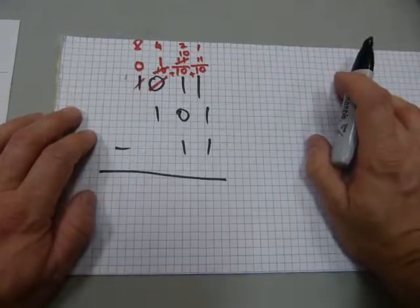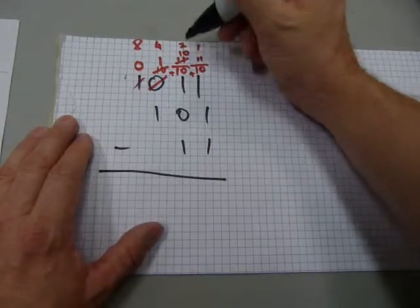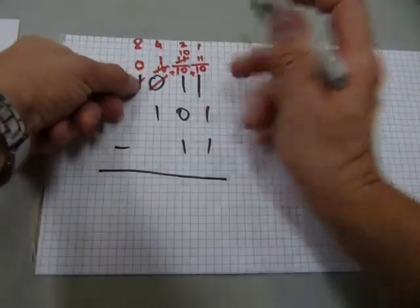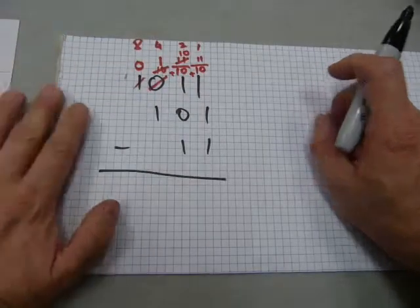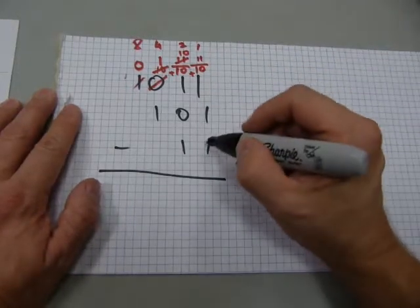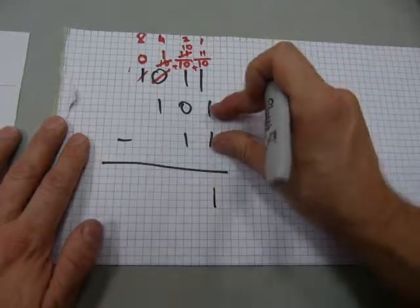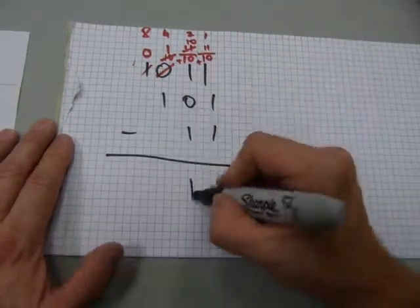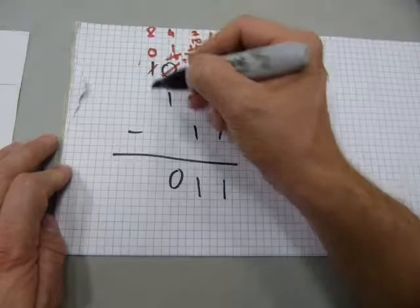That's four plus two plus two plus one plus one plus one — which is eleven. Originally we had 1011: one in the eights column is eight, plus one plus one plus one is eleven. Good, we still have eleven. Now we subtract: three ones minus one plus one plus one is two, so three minus two is one. Two twos minus one is one. One four minus one is zero. Zero eights minus zero is zero. The answer is 0011, which is three.